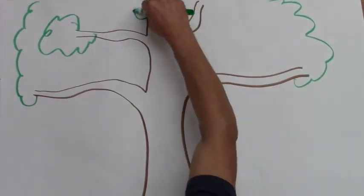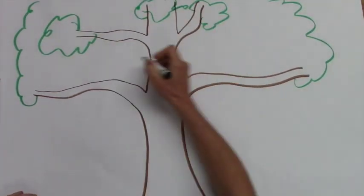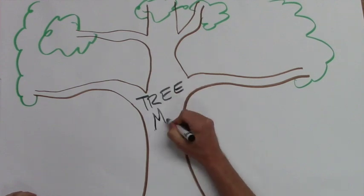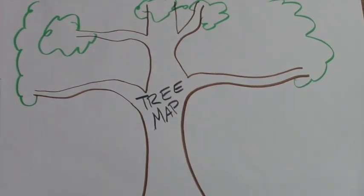Trees have a trunk, branches, and leaves, and so does the tree map. The tree map is perfect for putting things into categories.